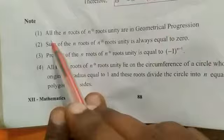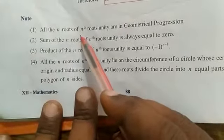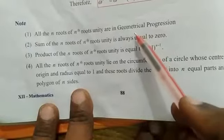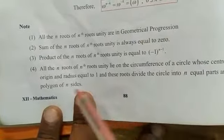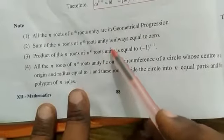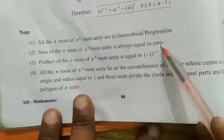All the n roots of nth root of unity are in geometrical progression. The sum of the n roots of nth root of unity is always equal to 0.